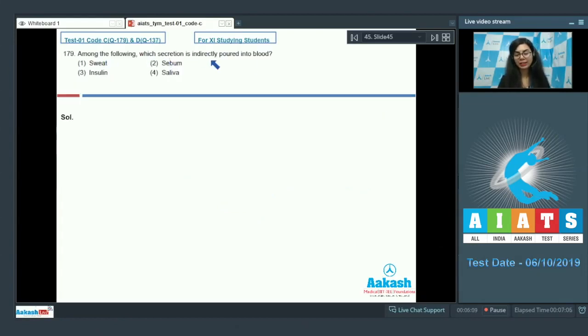Question 179: among the following, which secretion is indirectly poured into blood? Sweat, sebum, insulin, saliva. The question is mentioning indirectly poured into blood, and this is the characteristic of endocrine secretions.